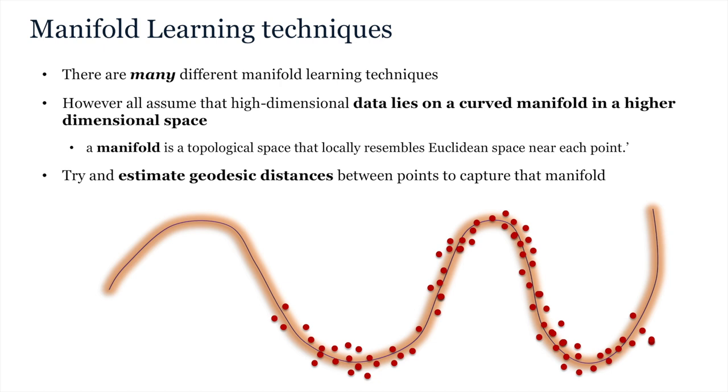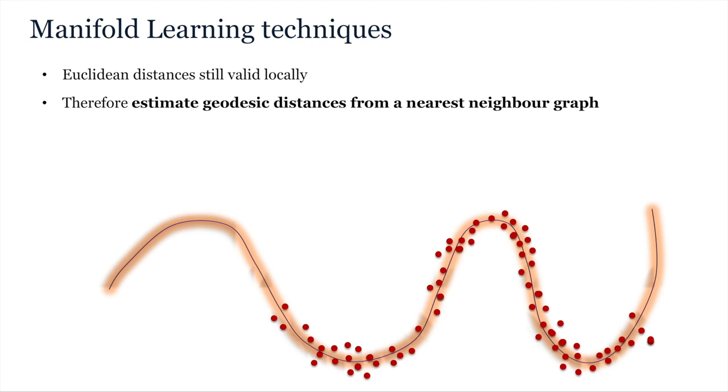It does this by assuming that Euclidean distances are only valid locally and ignores the Euclidean distances between distant points. For example, this distance here. These geodesic distances can be estimated by creating what is known as the nearest neighbour graph, connecting points only to the points very close by. For example, as follows. This means that you are only connecting points together at a scale where Euclidean distances between points are close enough to the distances along the curved surface. The geodesic distance between distant points may then be recovered by estimating the shortest path between points in this graph, stepping from point to point along the connected edges between neighbours.